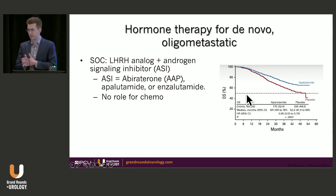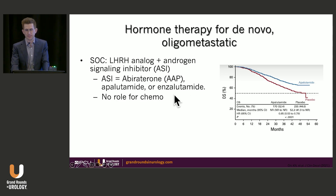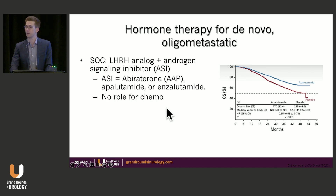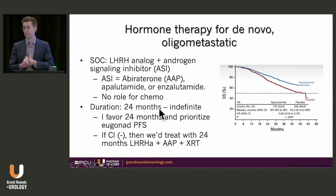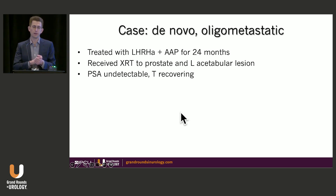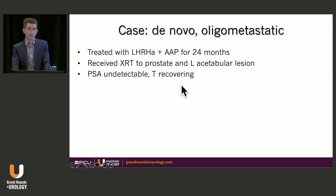For hormone therapy in de novo oligometastatic disease, standard of care would be indefinite doublet — I still think that's overkill, though I don't have a lot of data to lean on. When choosing an androgen signaling inhibitor for low-volume oligometastatic disease, you're looking at abiraterone, apalutamide, or enzalutamide. They all produce similar reductions in the hazard for death of about 30 to 40 percent. There's no role for chemotherapy for a patient like this. Treatment duration is likely somewhere between 24 months and indefinitely for de novo metastatic disease. For my patients, I'm offering 24 months of ADT plus abiraterone. This gentleman also got radiation to the prostate and the left acetabular lesion. His PSA is undetectable, his testosterone is recovering, and overall he's doing well.